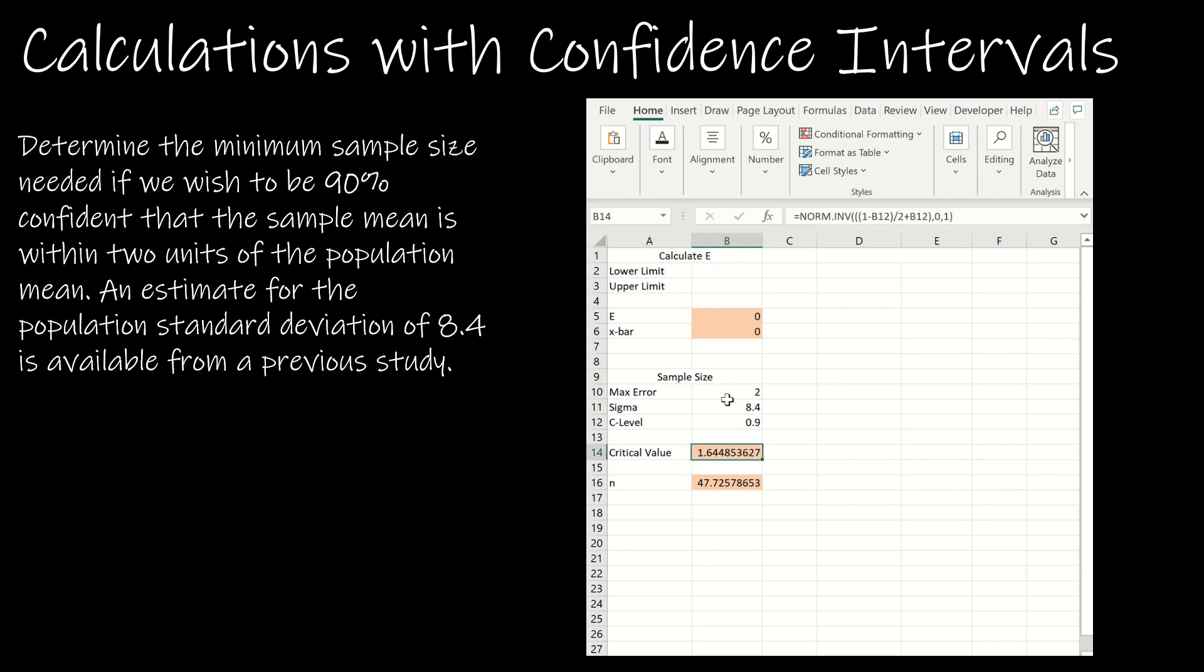And I have set up Excel to find the critical value. And again, how did I do that? I'm just using norm inverse, or I should have used norm dot S dot inverse. And then I wouldn't need the comma 0 comma 1, but it's going to give me the same thing.